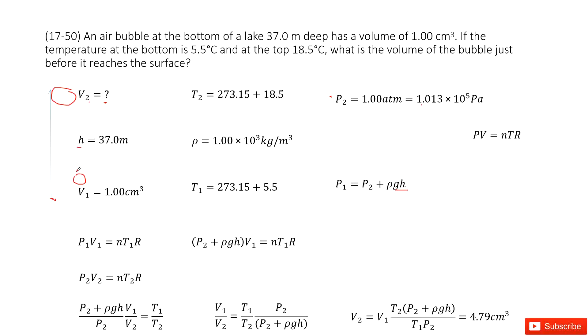We consider this air bubble as ideal gas, so we use the ideal gas law: PV equals nTR. At the bottom, state 1, P1 times V1 equals nT1R. This n is the mole number of the gas in this bubble. It will not change because the air will not move out or move in. At the surface, state 2, we have P2 times V2 equals nT2R.